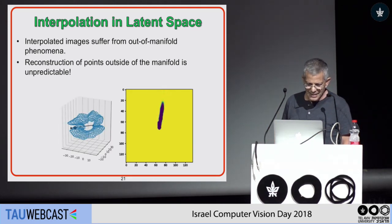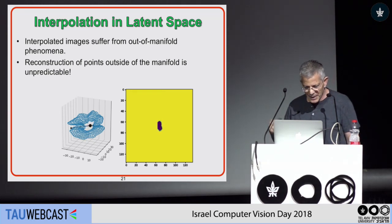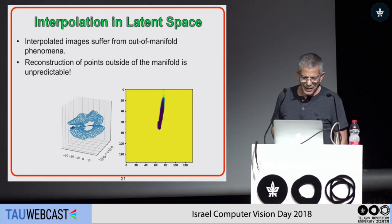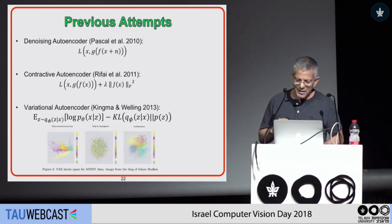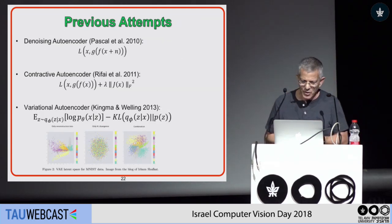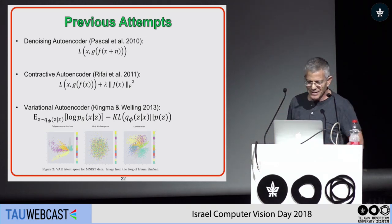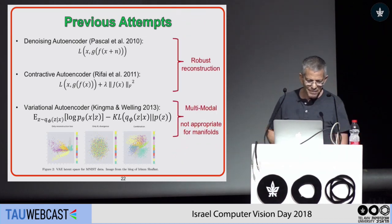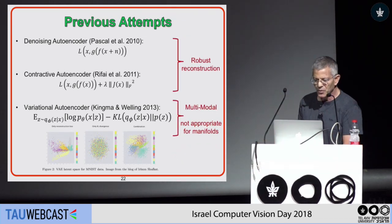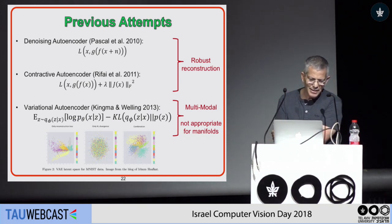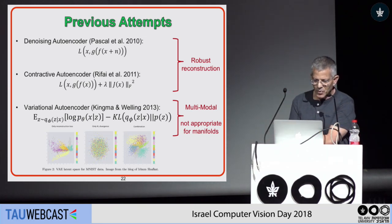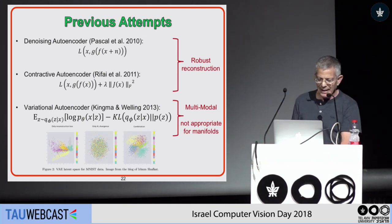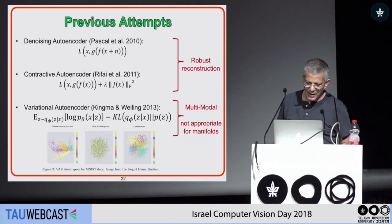Looking at previous attempts to solve this problem, we didn't find a precise approach dealing with it — perhaps only the variational autoencoder, which became very popular in recent years. But the variational autoencoder is more appropriate for the multimodal case; it is not appropriate for manifolds.